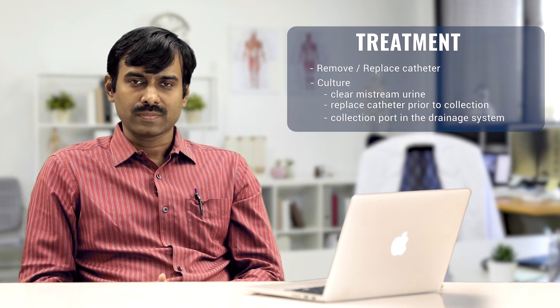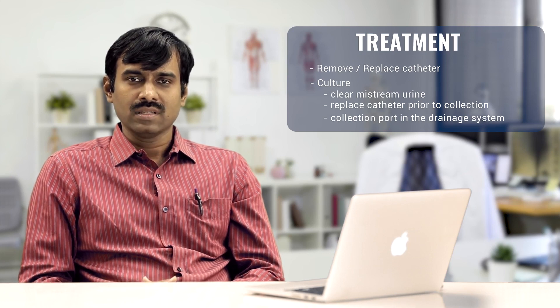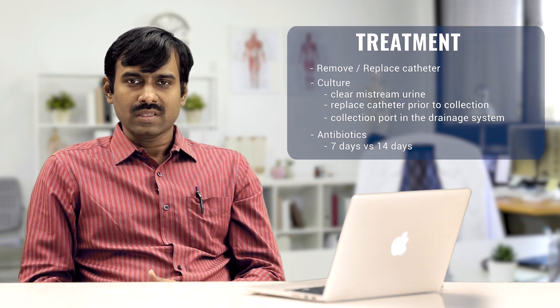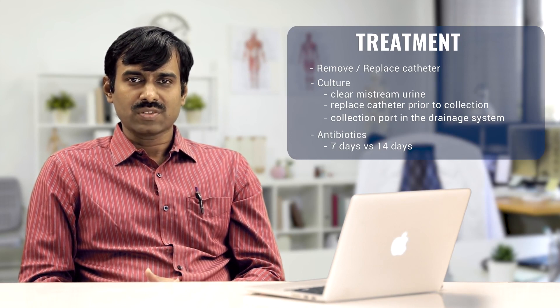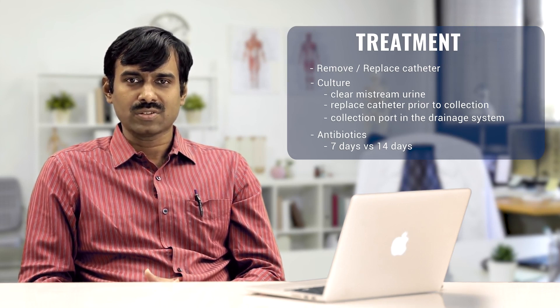Management of CAUTI: Like any other sepsis, CAUTI requires prompt source control. The source of infection is the catheter, so it must be removed or replaced promptly. The second aspect is taking an appropriate sample — a urine specimen can be collected from a midstream voided specimen or from a replaced new catheter, and can also be collected from the collection port of the drainage system. The main aspect of management is antibiotic therapy, which should be appropriate and of adequate duration. The ideal duration of treatment is seven days; however, if the patient has a complicated UTI or poor response to treatment, it can be extended to 14 days.